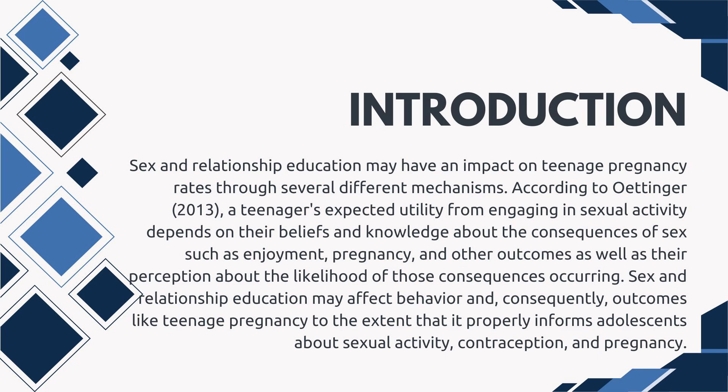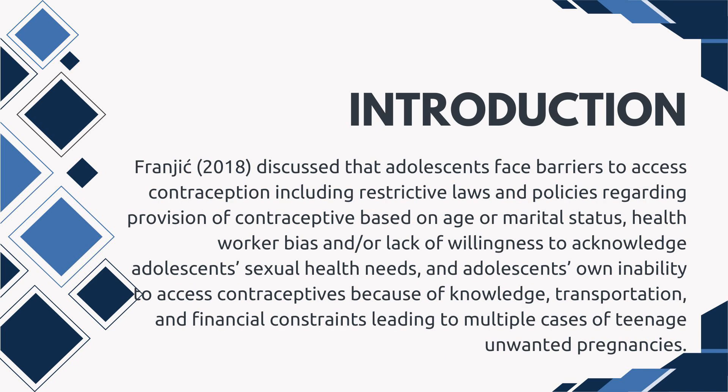Sex and relationship education may affect behavior and consequently outcomes like teenage pregnancy, to the extent that it properly informs adolescents about sexual activity, contraception, and pregnancy. Frangic (2018) discussed that adolescents face barriers to accessing contraception, including restrictive laws and policies regarding provision of contraceptives based on age or marital status, health worker bias, lack of willingness to acknowledge adolescents' sexual health needs, and adolescents' own inability to access contraceptives because of knowledge, transportation, and financial constraints.